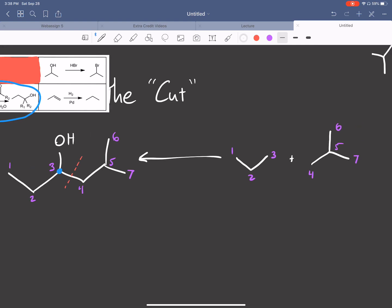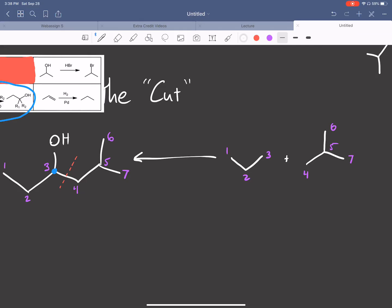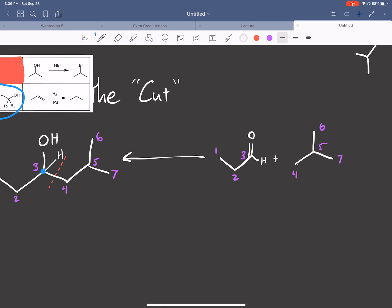And so we cut between three and four. And so now what you want to do is look at the carbon that the OH is on. That carbon becomes a carbonyl. So we had our OH there at three. So now it just becomes carbonyl and there was an H over there. So I'm just going to put the H right there. So that's one of our reactants. And the carbon of the bond that we cut that did not have the OH has a lithium coming off of it. So we cut the three and four bond. And so off of carbon four, we have a lithium.